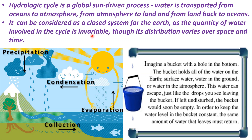The hydrologic cycle is an interactive system. Water in the atmosphere, in the ocean, on land, and underground is linked — changing one modifies the others. Just imagine a bucket with a hole in the bottom. The bucket holds all the water on Earth: surface water, water in the ground, and water in the atmosphere. Water can escape like drops leaving the bucket. If left undisturbed, the bucket would soon be empty. To keep the water level constant, the same amount that leaves must return — and the same is happening on our Earth in the form of the water cycle.